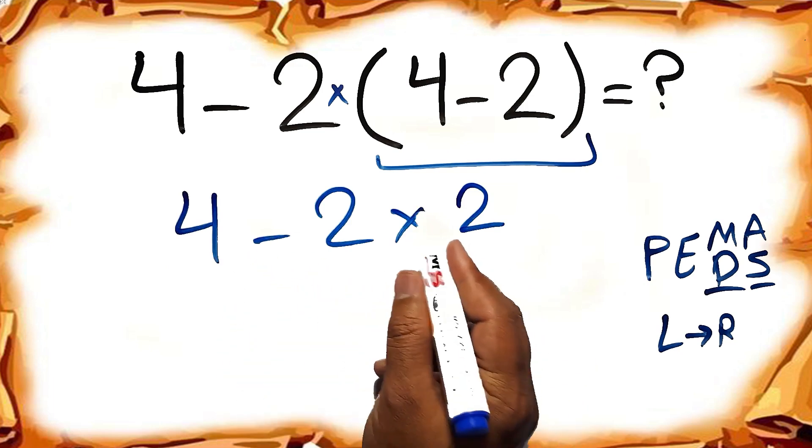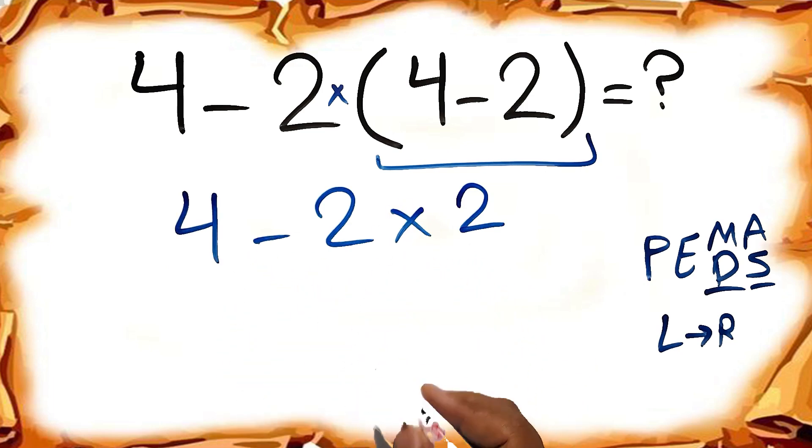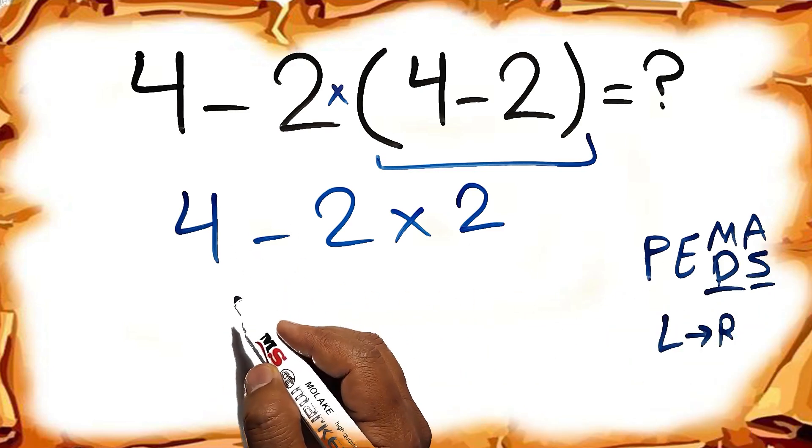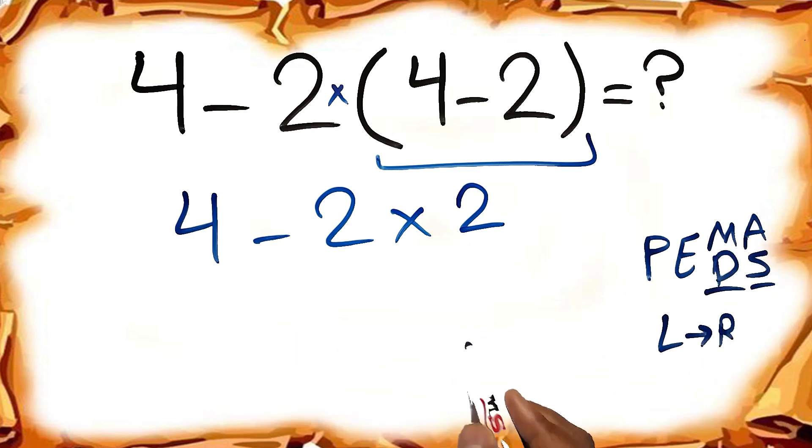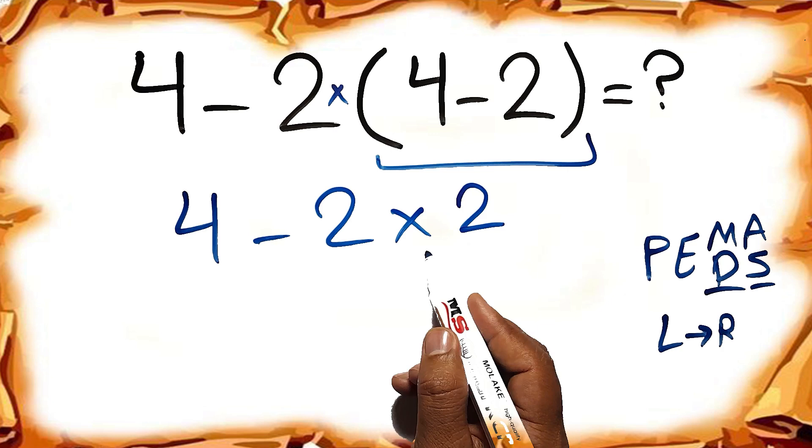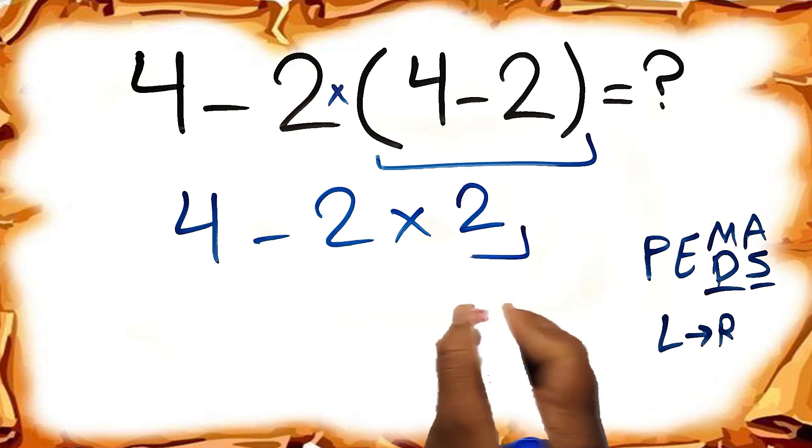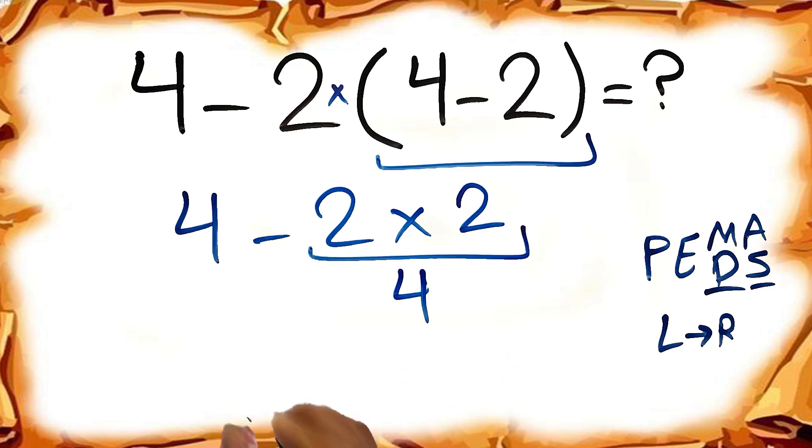Now we have 1 subtraction and 1 multiplication. As I said, according to the PEMDAS, multiplication has higher priority than subtraction. Multiplication comes before subtraction. So here first we have to do this multiplication, then this subtraction. 2 times 2 is just 4. So 4 minus 4, which equals 0. And this is our final answer to this problem.